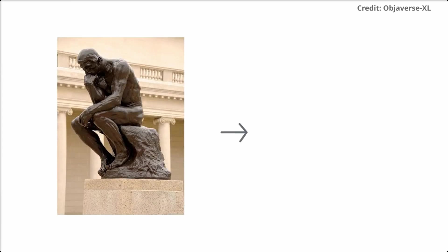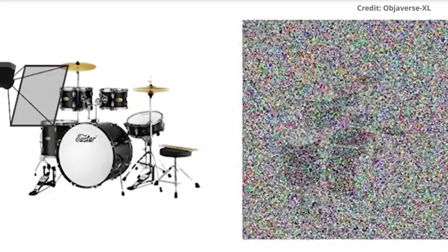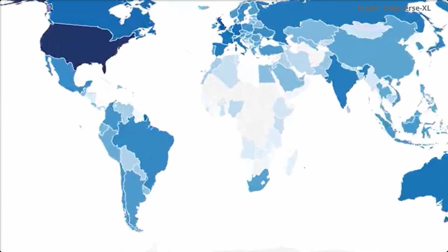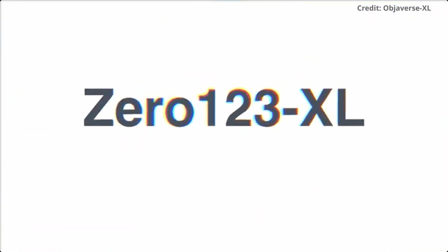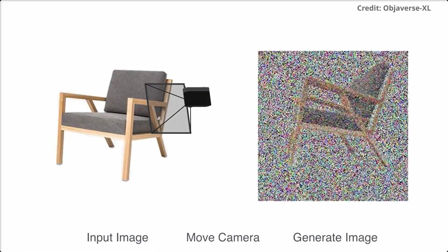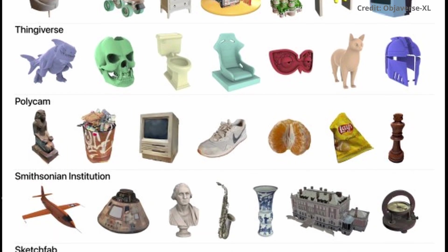Objeverse XL is a groundbreaking solution to this data scarcity issue in 3D AI. A consortium of dedicated researchers compiled this extensive collection of over 10 million 3D objects. The database, a tenfold expansion of the original Objeverse dataset unveiled in April, sources data from various online platforms, including Sketchfab, Thingiverse and Polycam.